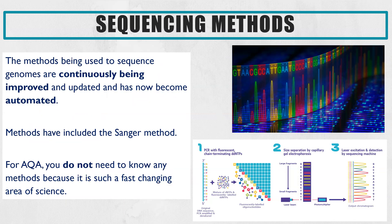You don't actually have to know the method of how scientists sequence a genome. The reason for that is it used to be on the specification, but they took it off because it is such a fast-moving area of science that once you learn one method it's already changed within a few years. What you do need to be aware of is that the methods they use are continuously being improved and are now fully automated.